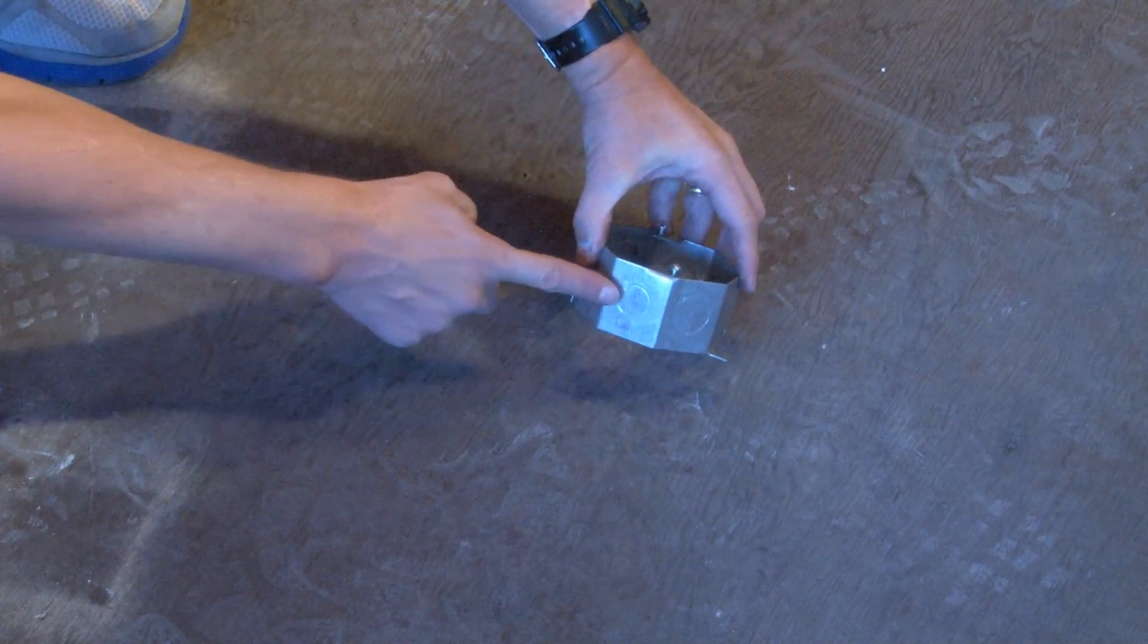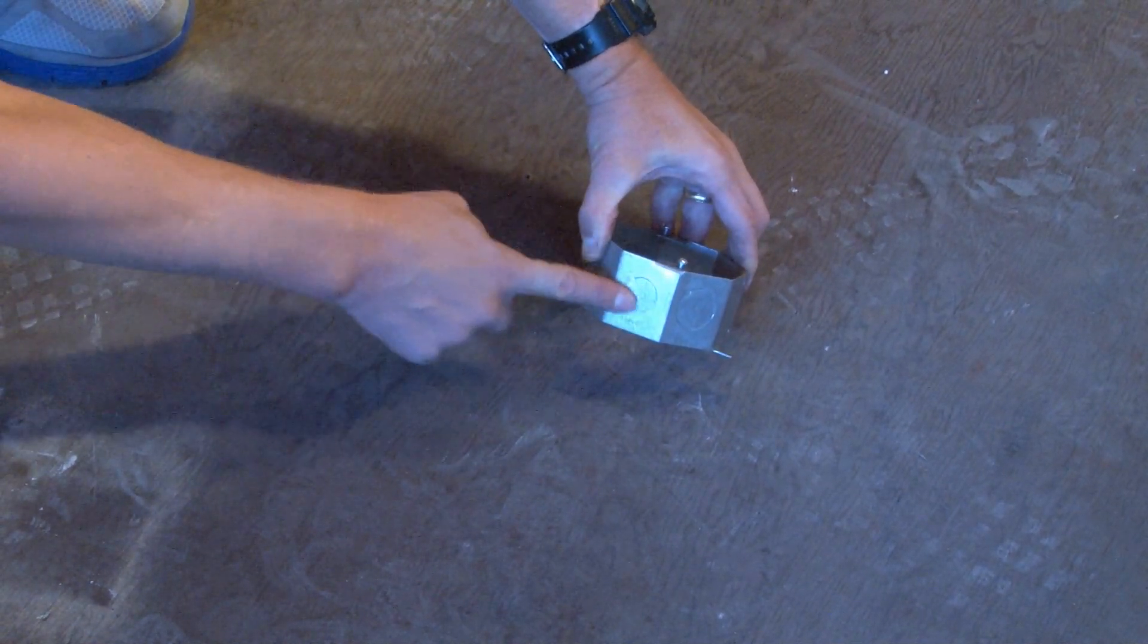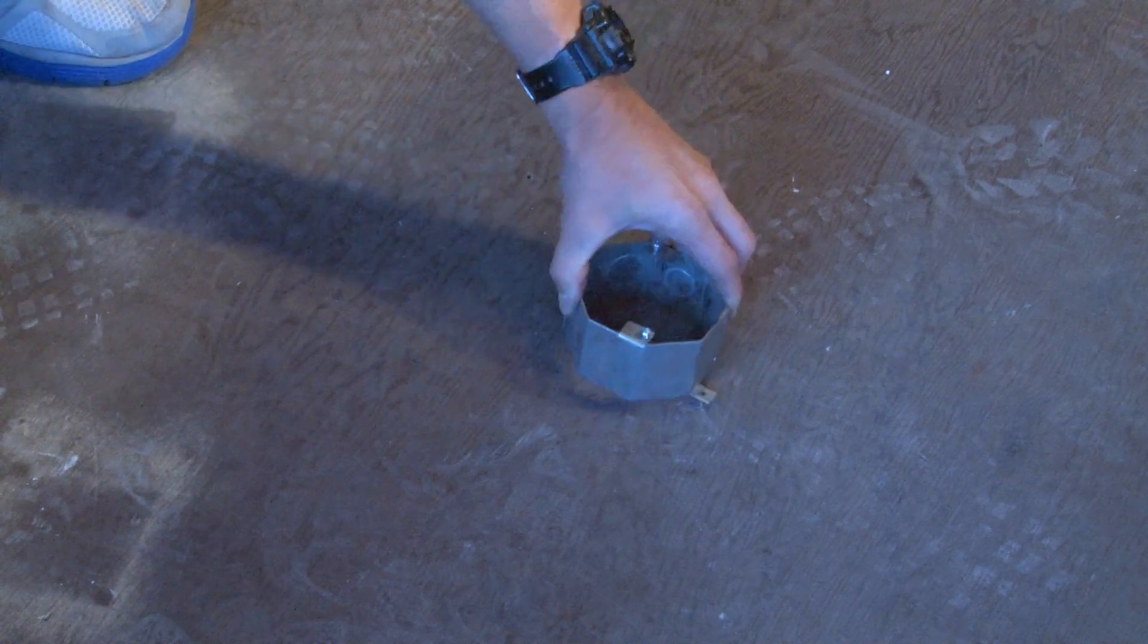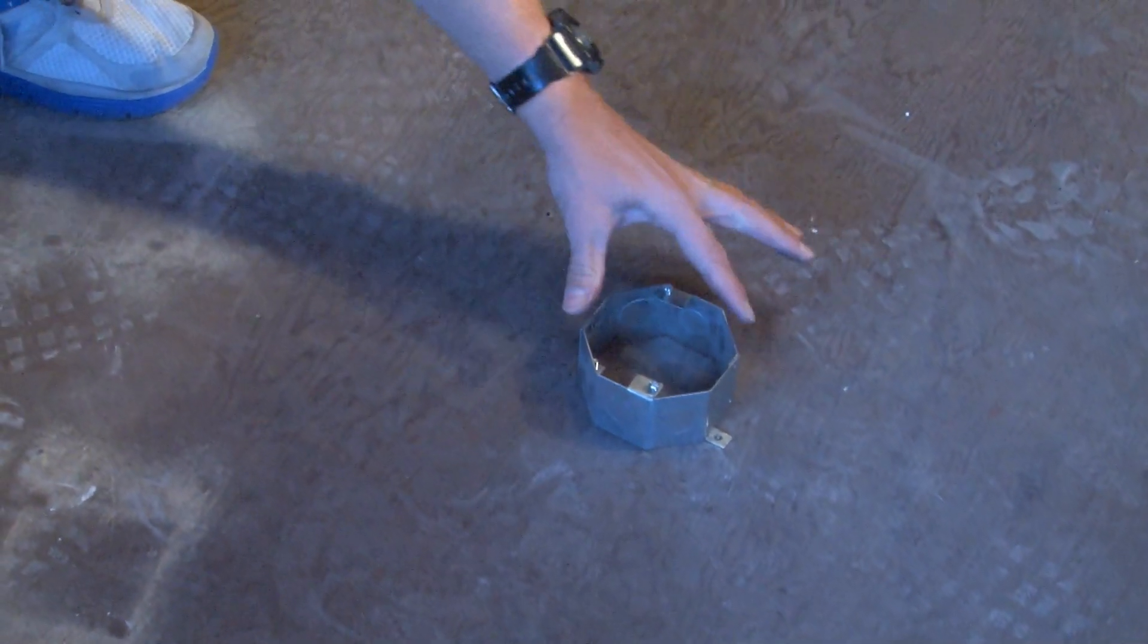We re-hit our particular knockouts so that they create a nice watertight seal preventing any concrete slurry from entering the inside of the box.